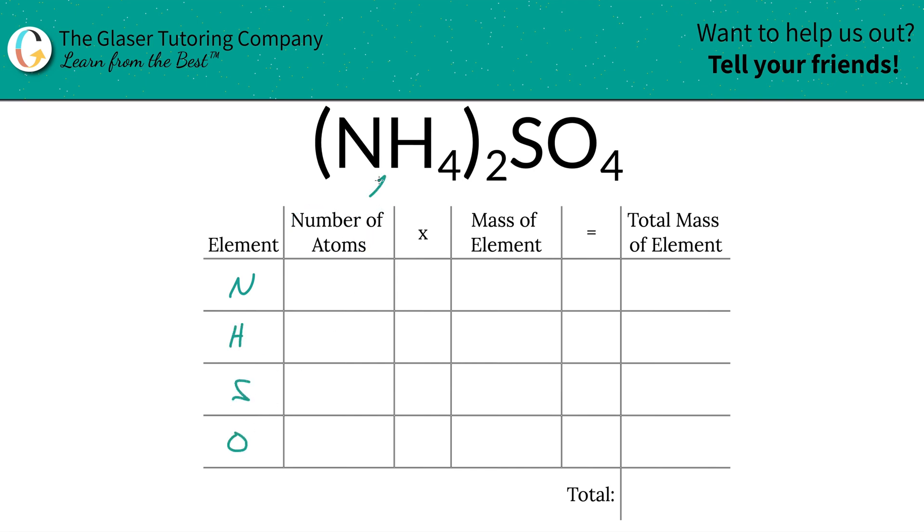Then we got to identify the number of atoms of each and that's where the subscripts come into play. Now at the bottom of every element you want to write in your subscripts if you don't see one. So for example, there's a one on nitrogen and there's also a one on sulfur.